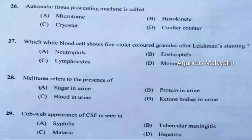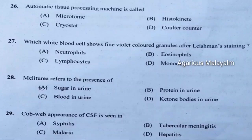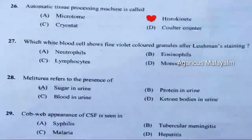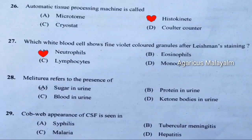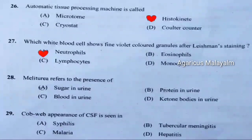Twenty-sixth question: Automatic tissue processing machine is called. Correct answer is option B — histokinет. Twenty-seventh question: Which white blood cell shows fine violet colored granules after Leishman staining? Correct answer is option A — neutrophils. Twenty-eighth question: Mellituria refers to the presence of. Correct answer is option A — sugar in urine.